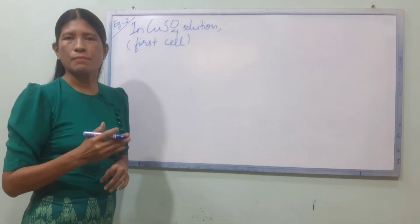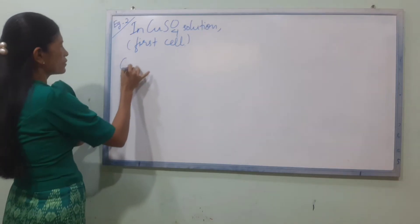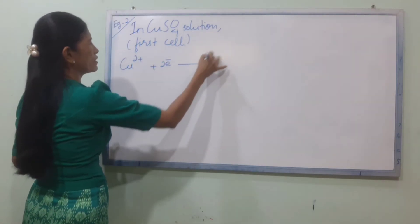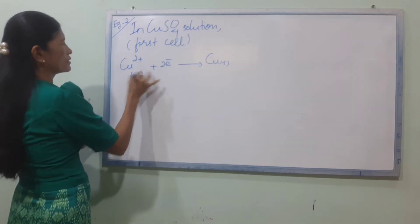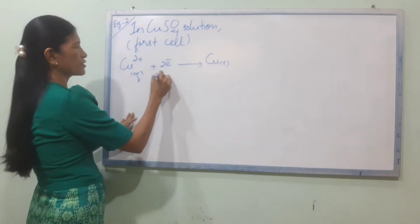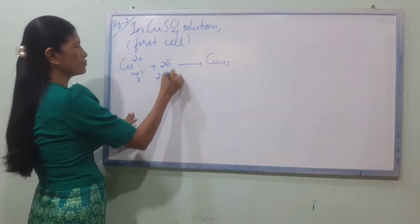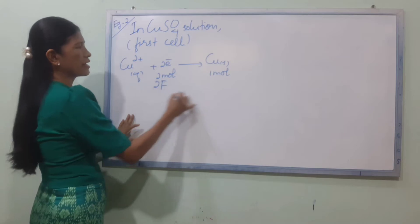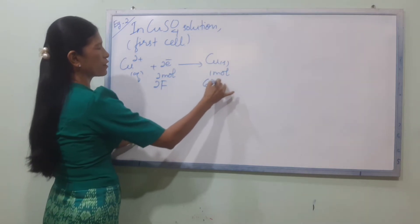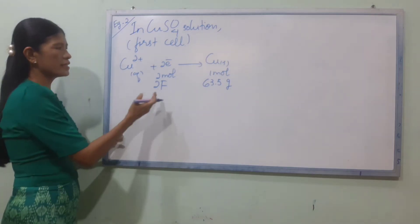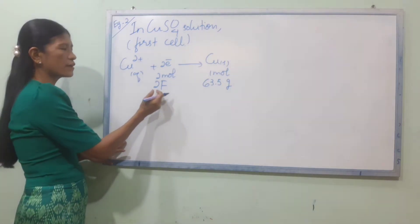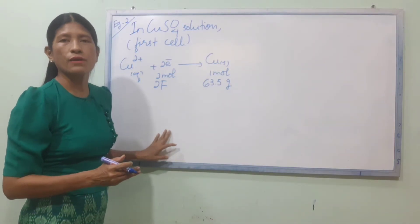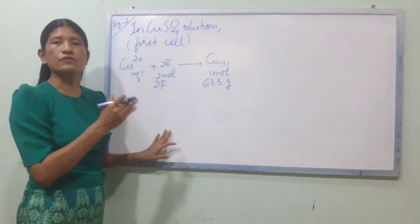For the first cell, using the equation: Cu²⁺ plus 2 electrons forming Cu solid. In this equation, 2 moles of electrons correspond to 63.5 grams of copper. We have 0.146 grams of copper deposited.